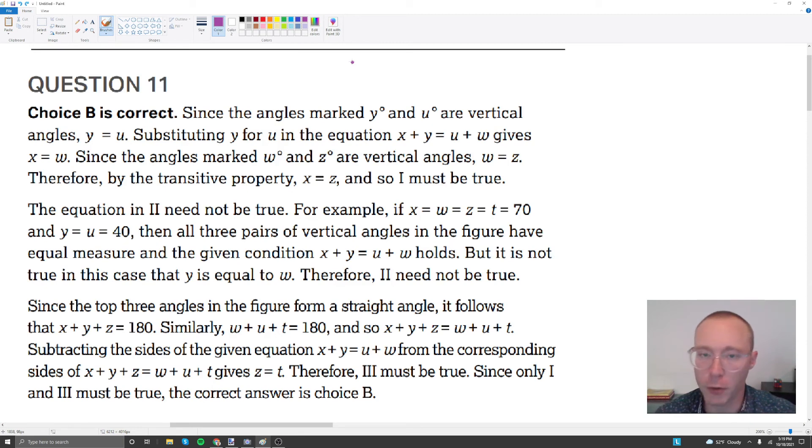If we take a quick look at the explanation that's offered in the SAT prep book or on the College Board website, we can see that choice B is the correct answer. And there's a different way that they recommend doing the problem. They recommend using the vertical angle theorem, and also using the idea that three angles that are on a line have to add up to 180. I realized that not everyone can think visually. So for some of you, this might be an easier way to do the problem.